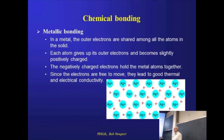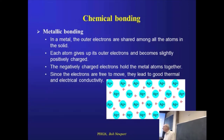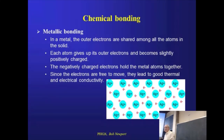Thermal conductivity is very similar. Heat one end of a silver bar and you make the positive ions jiggle around a little bit more. But the key thing is that you've added energy to the gas of electrons, so they're now moving much faster. They will collide with other electrons and influence the positive ion cores, moving that energy through the system very fast because they are moving so fast. That's the root of thermal conductivity.